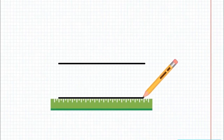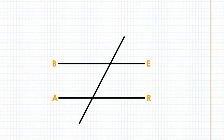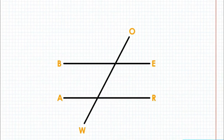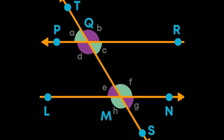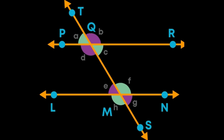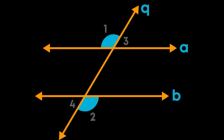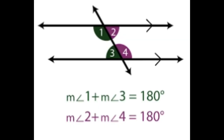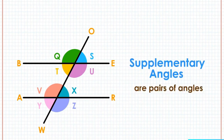A transversal line intersects two or more lines at distinct points. When it cuts parallel lines: vertically opposite angles are equal, corresponding angles are equal, alternative interior angles are equal, and co-interior angles add up to 180 degrees. If there's a transversal line, this shows the transversal line.